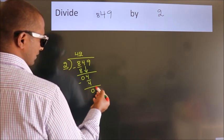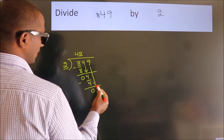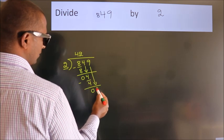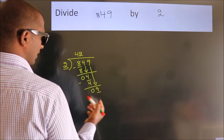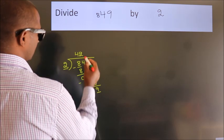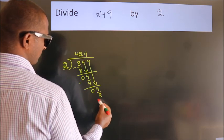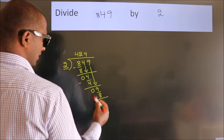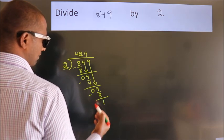After this, bring down the beside number, so 9 down. A number close to 9 in the 2 table is 2 4s 8. Now we subtract, we get 1.